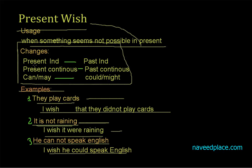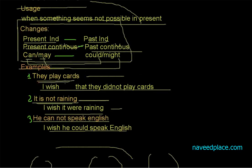Now we should see the changes. Whenever we have a sentence in present definite, we will change it to past definite. Whenever we have a tense in present continuous, we will change it into past continuous. Then, when we have 'can' or 'may', we will change 'can' into 'could' and 'may' into 'might'.